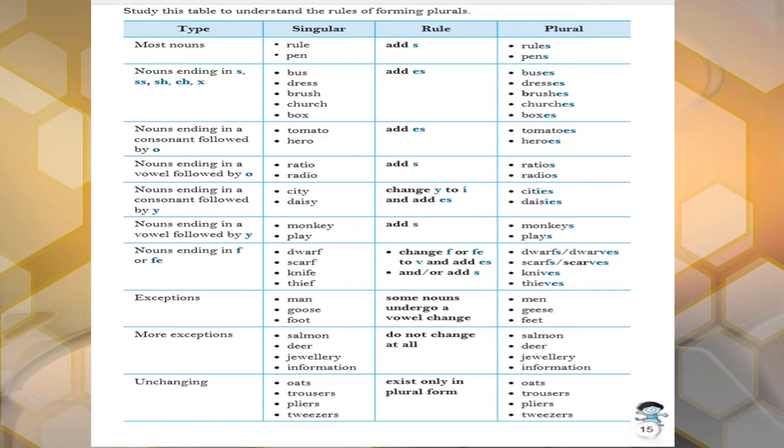Some more exceptions are given. Salmon, deer, jewelry, information. These are always in a plural form. You do not have to add any S or ES or anything, right?